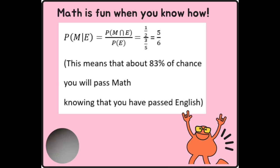Now, let's think about this a little bit more. What does that five over six really mean? It means that if we convert that into percentage, it's about 83%. So, this means about 83% chance that you will pass maths knowing that you already have passed English.